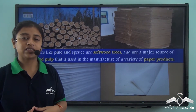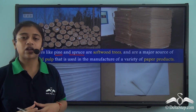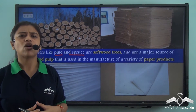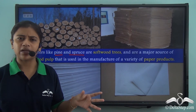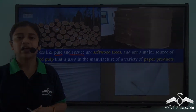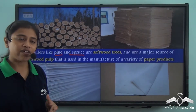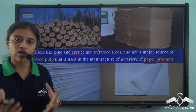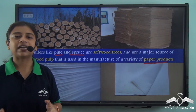Coniferous trees, particularly spruce and pine, provide softwood. These softwood trees are a good source of softwood pulp — they have long fibres, are less dense or light in nature, and are good absorbent products. Therefore, the softwood pulp drawn from these trees is used in the manufacture of a variety of paper products. These softwood trees in the taiga forest are commercially very valuable and used for a variety of purposes.